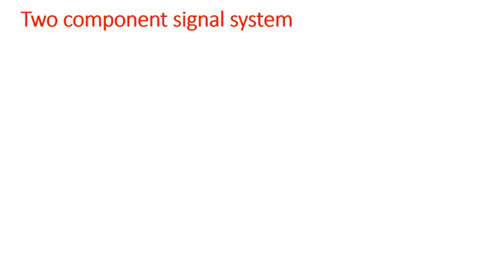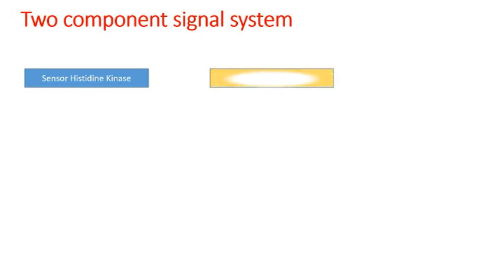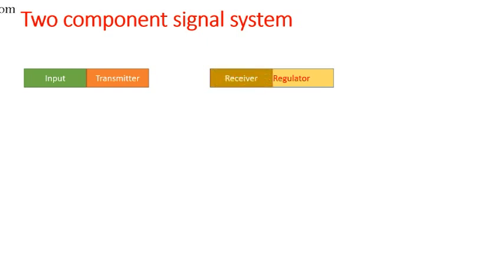One type is the very basic one, and another involves an accessory protein in between. In the normal two-component system, one component is the sensory histidine kinase domain and the other is the response regulator domain. The sensory histidine kinase domain is divided into two parts: the input region and the transmitter region. The response regulator is composed of the receiver region and the output region.